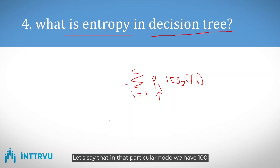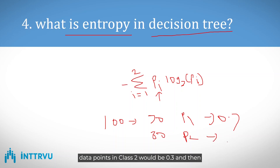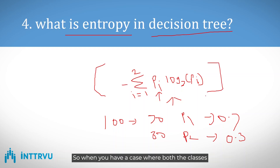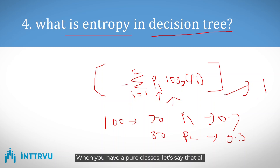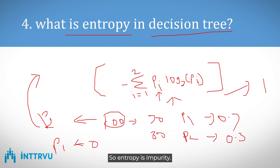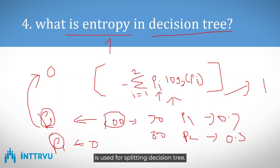For example, in a binary classification problem with 100 data points in a node — 70 belonging to class 1 and 30 to class 2 — the proportion for class 1 is 0.7 and for class 2 is 0.3, and entropy is calculated from these. When both classes have equal samples, entropy equals 1. When all data points belong to a single class, entropy equals 0, representing pure classes.